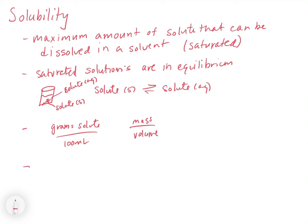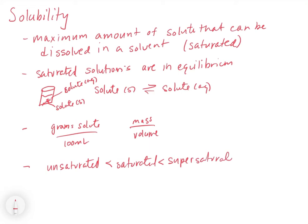There are two other terms that go along with this. We have unsaturated, which is a concentration less than a saturated solution. And then we have a rare metastable circumstance called supersaturated, where the concentration is actually greater than the saturation level. These solutions are metastable — not formed naturally. Most often they're formed by heating something to get it to dissolve, then gently cooling it back down without allowing it to precipitate out. If you shake them or introduce a small amount of solid, they will rapidly and dramatically crystallize out.